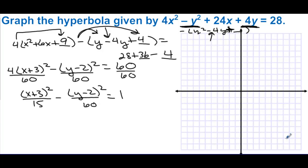We get 4 times (x plus 3) squared minus (y minus 2) squared equals 60. Dividing everyone by 60 gives (x plus 3) squared over 15 minus (y minus 2) squared over 60 equals 1. The center is (negative 3, 2).